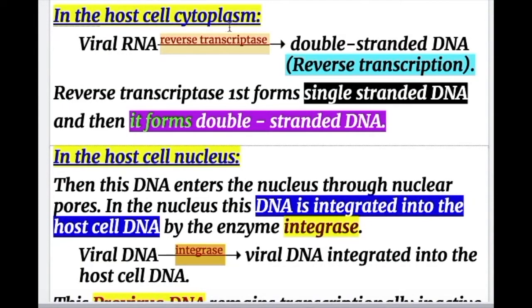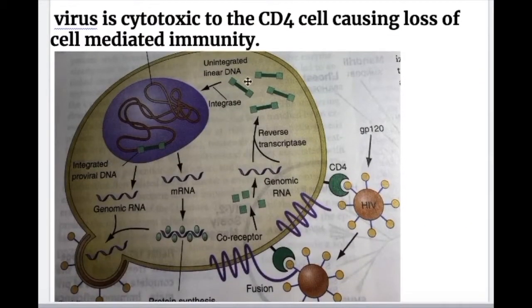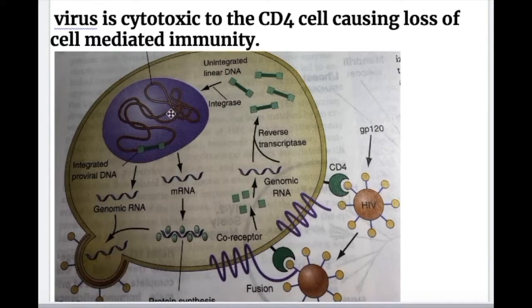In the host cell cytoplasm, viral reverse transcriptase acts on genomic RNA and converts it into double-stranded DNA — first forming single-stranded DNA, then double-stranded DNA. This DNA then enters through the nucleopore along with integrase into the nucleus, where it integrates with the CD4 cell's DNA.